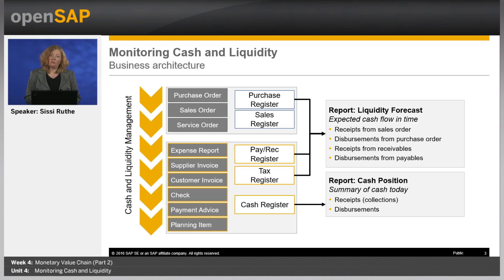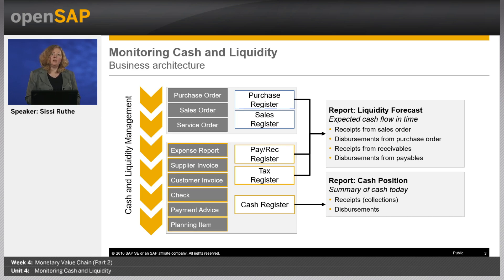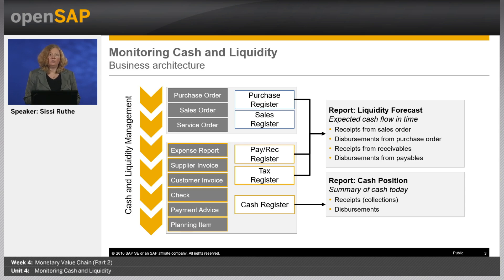The relevant registers are: the cash register to get an overview on all cash receipts and disbursements such as bank transfers, checks, payment advices, and planned items; the payables and receivables and tax register for all open payables and receivables from supplier and customer invoices, travel and expense reports, and VAT declarations not yet paid; and the purchase and sales register for all open purchase, sales, and service orders not yet invoiced. The purchase register only exists logically, as it is complex to collect information on open orders considering existing deliveries, confirmations, and invoices not yet paid.